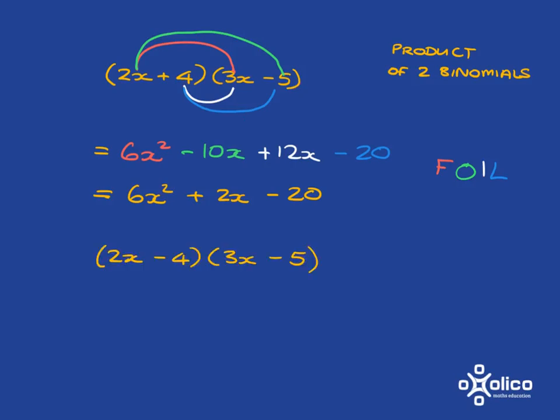One more quick example. This one I want to point out an important thing we've discussed before. When you've got a negative, put some bright sign around it so you don't forget it. I'll show you why. We're going to multiply out in the same way, so I'll first put all my arrows in as before.